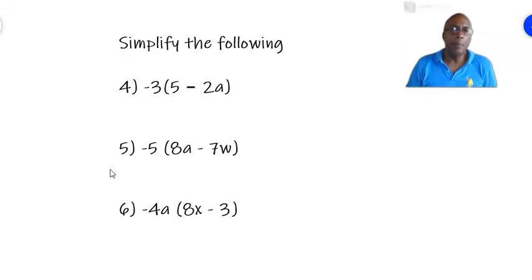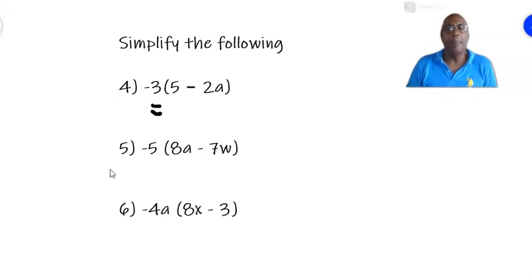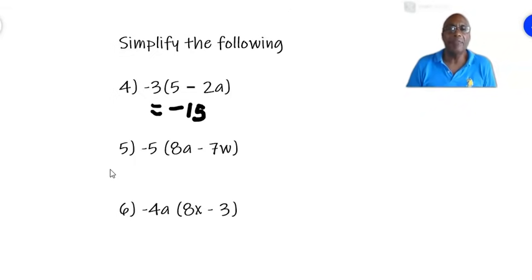Number 4 reads minus 3 multiplied by, in brackets, 5 minus 2a. As we did before, we multiply the term outside by each term inside. So, negative 3 times plus 5 is minus 15. And negative 3 times negative 2a — remember, you multiply the signs as well. A negative times a negative is a positive. So we get a positive, and 3 times 2a is 6a. So the answer is minus 15 plus 6a.